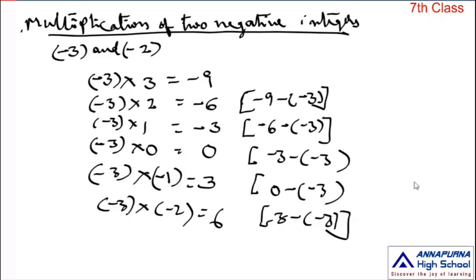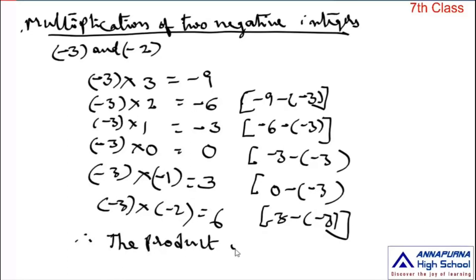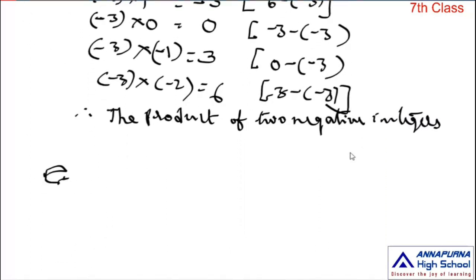Now observe how the product changed: minus 3 into minus 2 means plus 6. Simply, if you multiply two negative integers, multiply the numbers as whole numbers — 3 twos are 6 — and put a plus sign before it. So minus 3 into minus 2 equals plus 6. Therefore, the product of two negative integers is positive only.